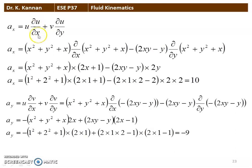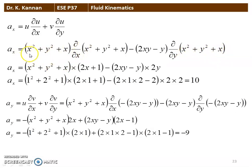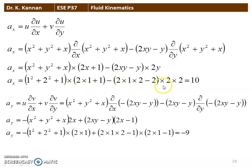AX = U·(∂U/∂X) + V·(∂U/∂Y). With U = X² + Y² + X, ∂U/∂X = 2X + 1 and ∂U/∂Y = 2Y. Substituting X=1, Y=2: AX = (1 + 4 + 1)(2·1 + 1) + (−2·1·2 − 2)(2·2) = 6·3 + (−6)·4 = 18 − 24... evaluating gives AX = 10.